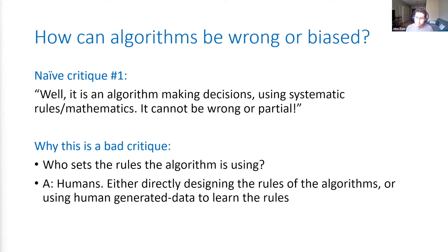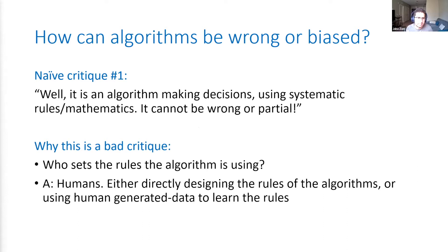Even at the level of a single algorithm, even under these restrictive assumptions, there can be issues of fairness. A lot of people will tell you that can't be true — because what we're doing is using an algorithm that makes decisions using mathematical, systematic rules. It can't be wrong, it can't be partial. This is a computer doing this. It's just math.